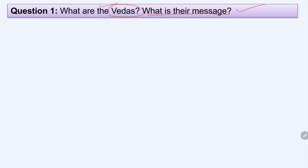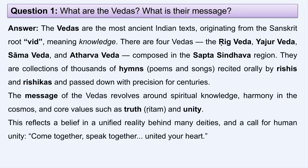In this chapter we have read about the Vedas and the Vedic school of thoughts, Vedic society, Jainism, and Buddhism. The Vedas are the most ancient Indian text. Initially they were not written down — they were orally passed on from one generation to another, especially by rishis and rishikas.